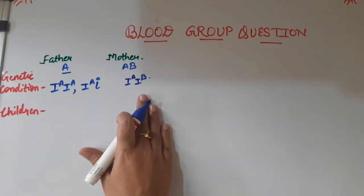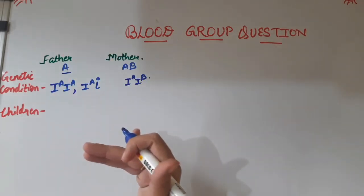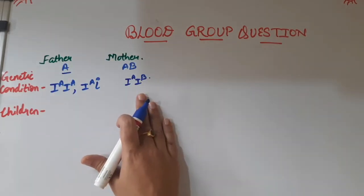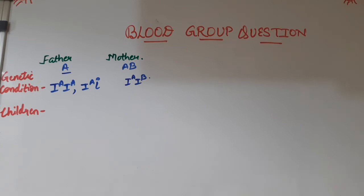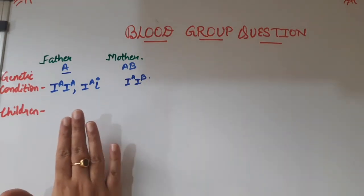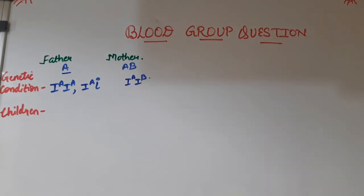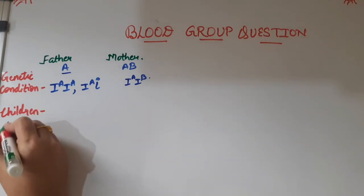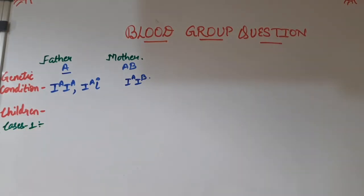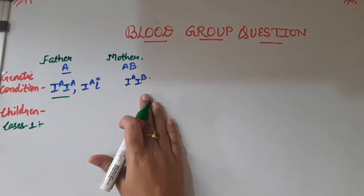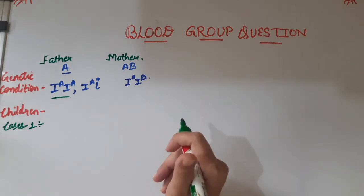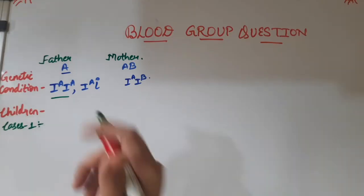If you are clear on how many genetic conditions or possibilities a person with a given blood group can have, you will be able to solve these questions easily. Now to continue further, we have to see what the possible blood group conditions in the children can be. We solve such problems on the basis of cases. Let us take the first case where the father belongs to a homozygous condition and the mother has AB blood group.